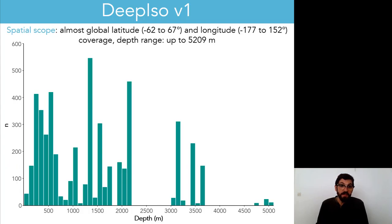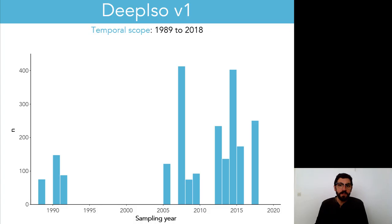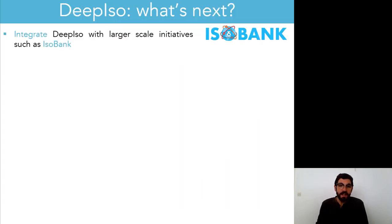From a spatial point of view, we have almost global latitude and longitude coverage, and the depth range goes up to over 5,000 meters. From a temporal point of view, we have mostly samples taken in recent years, but we also have quite a few older data points that date back to the late 1980s.